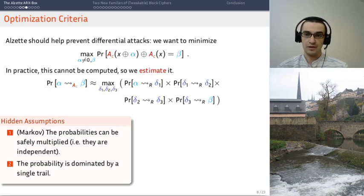But when we look at permutations with a fixed key, as is the case here, we do not have key additions. But we can still make this assumption and then see how it works in practice. That's how it's usually done. This also relies on the assumption that the probability is dominated by a single trail.